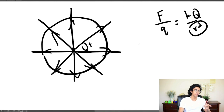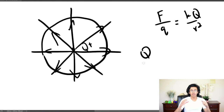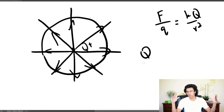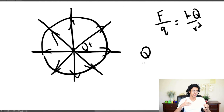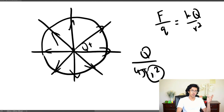The reason it's an R-squared relationship is that the number of lines is the same — basically your Q — but the area through which the lines pass increases a lot. The surface area of a sphere is just 4πR², so you can see that the field is inversely proportional to R squared.